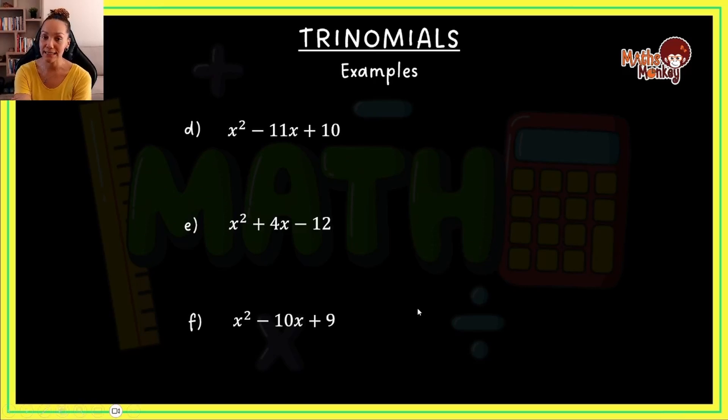If I have x squared minus 11x plus 10, I say, what are the factors of 10? It's 5 and 2, 10 and 1. Which of these are actually going to give me my middle term of negative 11? I know that 10 and 1 is going to work because I can go negative 10 minus 1. There's no way that 5 and 2 can give me 11. Then I open my brackets and I say x minus 10 and x minus 1. Then I check my answer. I check the last two terms. Negative 10 times negative 1 gives me positive 10. So that means that this is the correct answer.